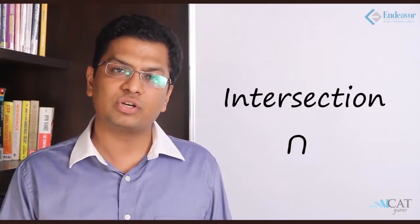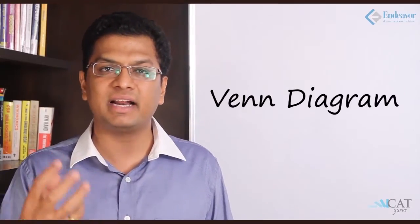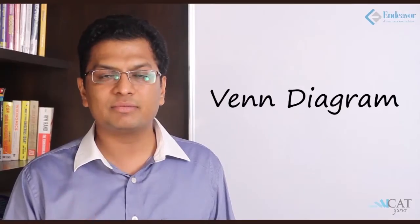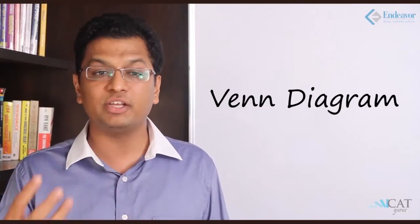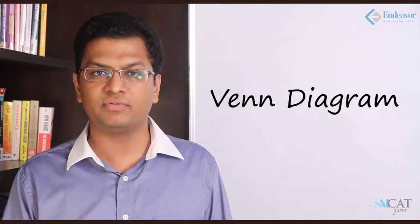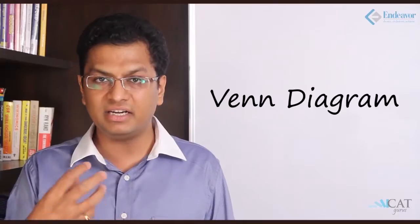We also use a concept called Venn diagrams. Venn diagrams are nothing but a simplified way to represent sets. They are normally in the form of circles and squares — there is a square representing the universal set, which is the master set, and inside it we have circles representing each individual set.